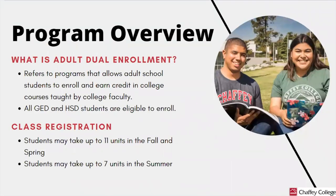Program overview: What is Adult Dual Enrollment? Adult Dual Enrollment refers to programs that allow adult school students to enroll and earn credit in college courses taught by college faculty. All GED and high school diploma students are eligible to enroll. Students may take up to 11 units in the fall and spring semesters, which is about three courses, and may take up to seven units in the summer, which is about two courses.